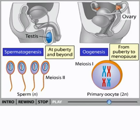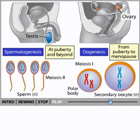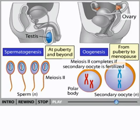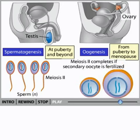Meiosis I results in the formation of two haploid cells: a large secondary oocyte and a smaller polar body, each containing a single complete set of chromosomes. The polar body plays no further role in oogenesis and reproduction. The haploid secondary oocyte then begins a second meiotic division. In the middle of meiosis II, the secondary oocyte is released into the oviduct. Meiosis II is completed only if the secondary oocyte is fertilized by a sperm.